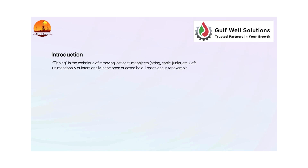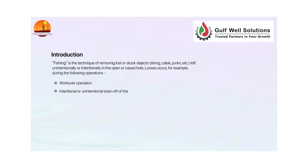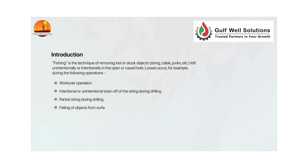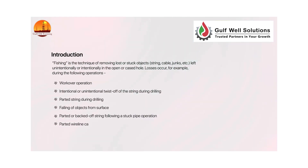Losses occur, for example, during the following operations: workover operation, intentional or unintentional twist-off of the string during drilling, parted string during drilling, falling of objects from surface, parted or backed-off string following a stuck pipe operation, parted wireline cable, and loss of cones, etc.